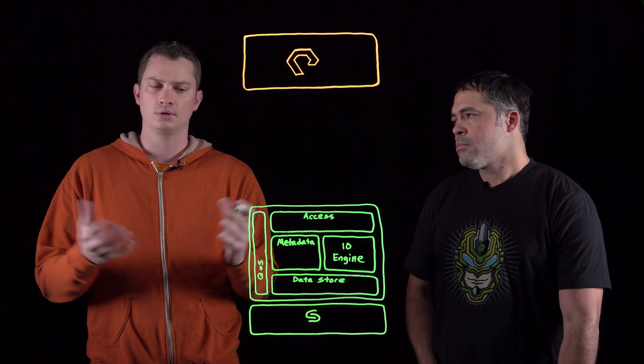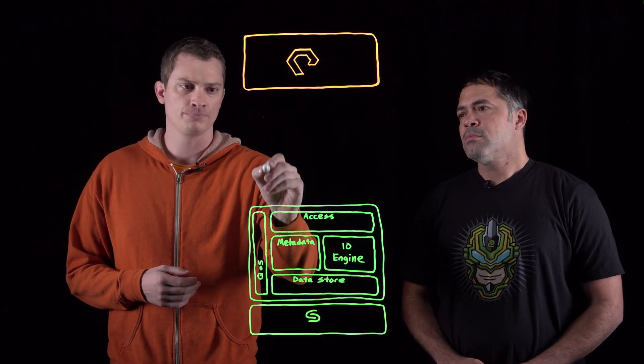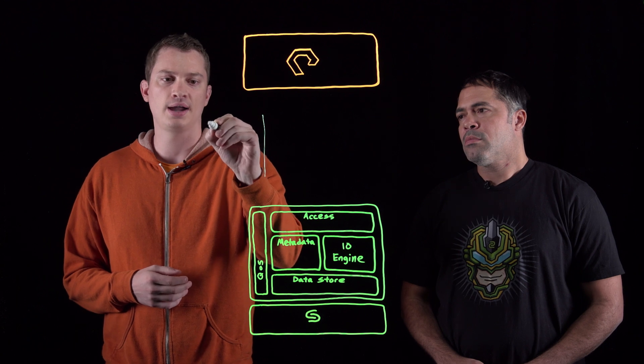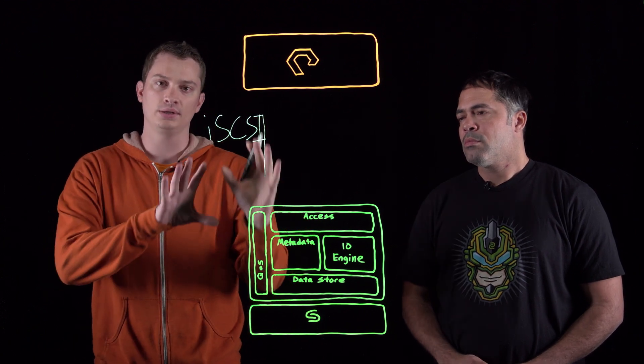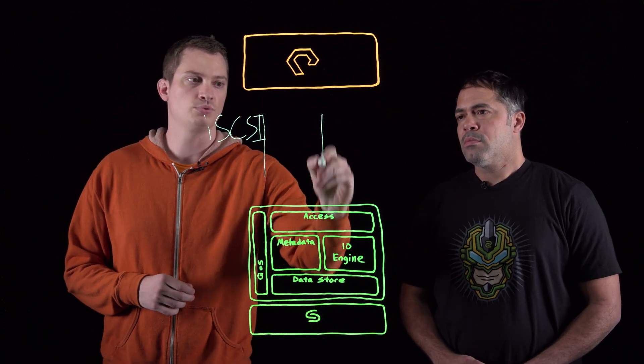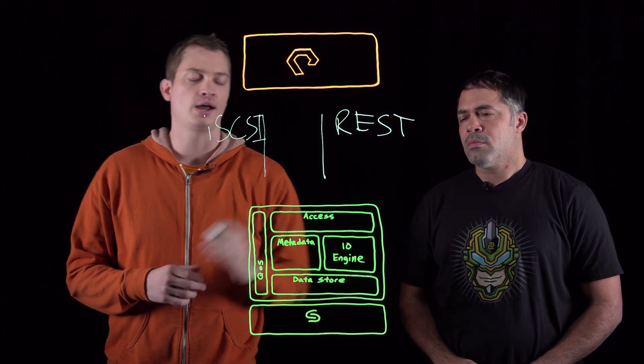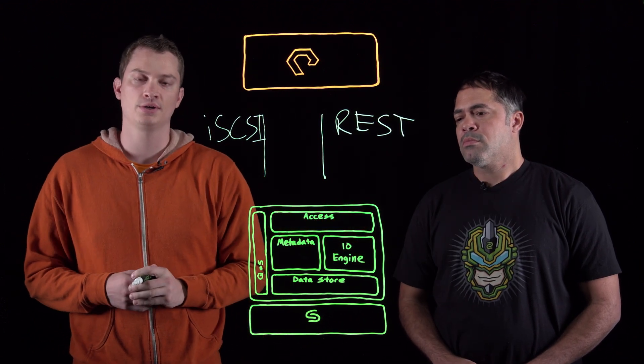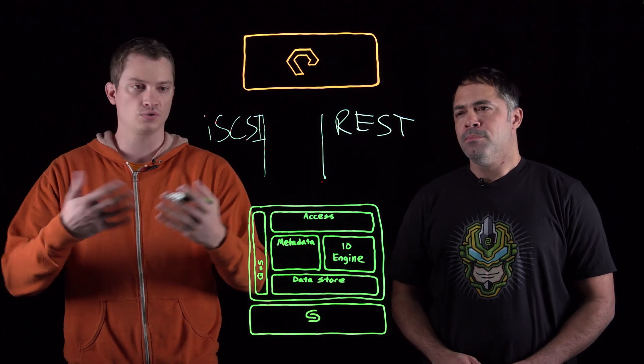So there's two connections between the Cohesity and the Flash Array. First, there is an iSCSI connection that actually allows the data mobility between the Flash Array and Cohesity. The second portion of this is REST. On the Flash Array, both controllers have a REST API service that you can make calls to to manage the Flash Array. Create volumes, create snapshots.